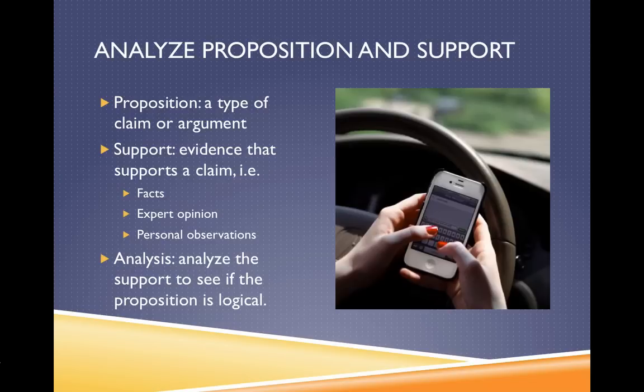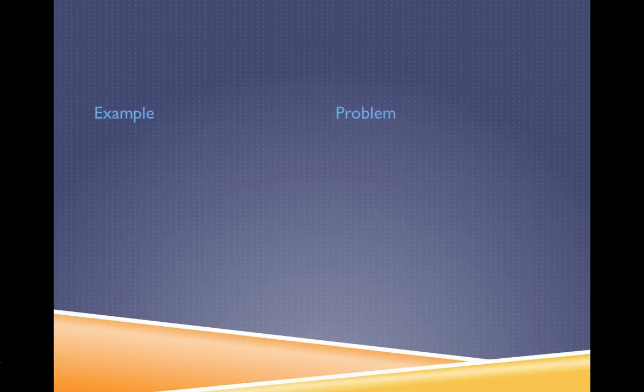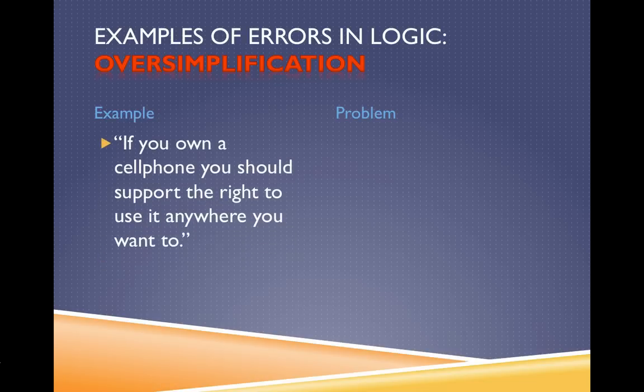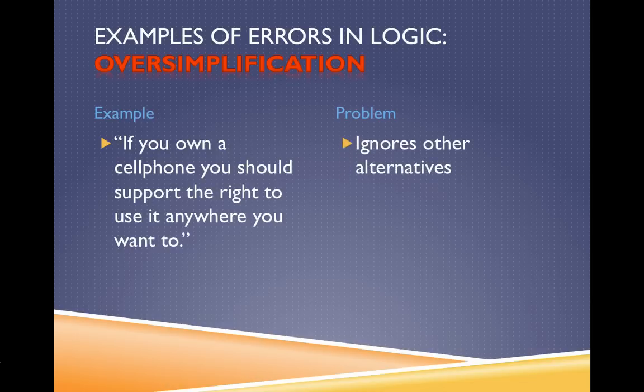Let's look at some examples of statements that show errors in logic, false analogies, and a couple other ones. The first error in logic is oversimplification. An example: if you own a cell phone, you should support the right to use it anywhere you want. This ignores other alternatives. You're just oversimplifying the entire argument.